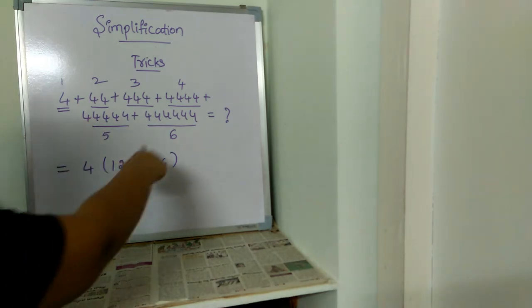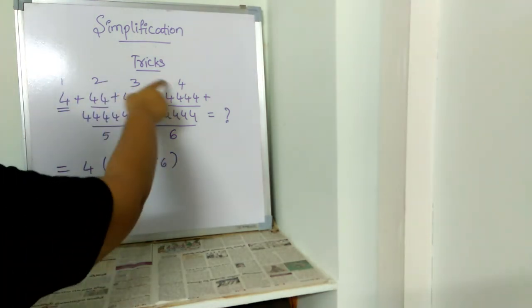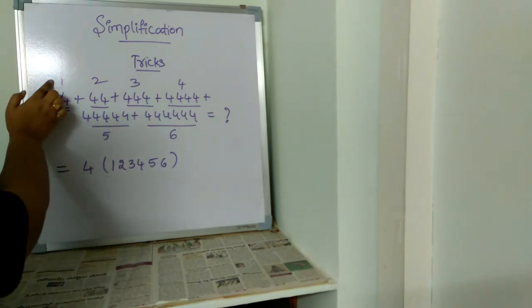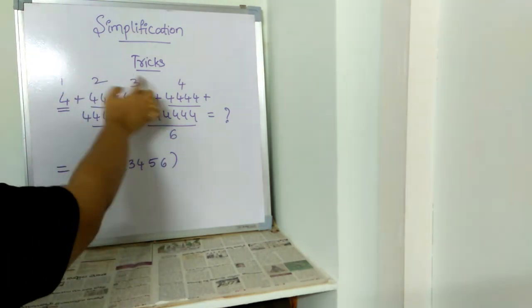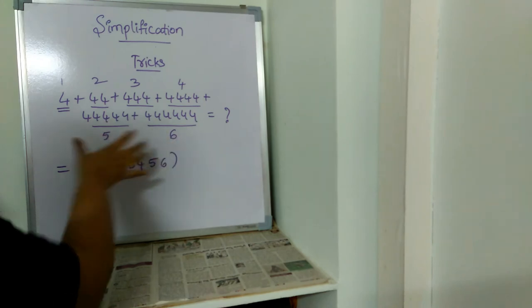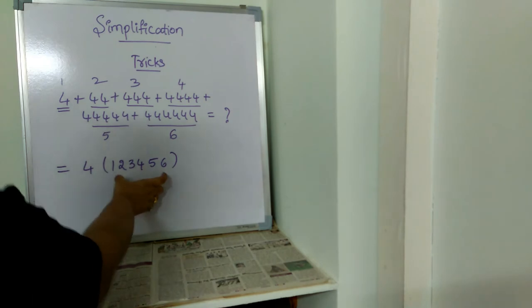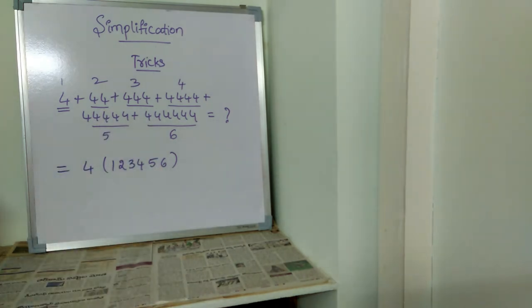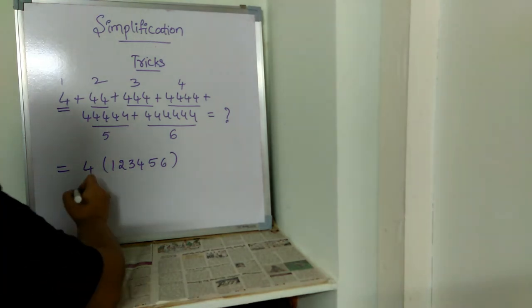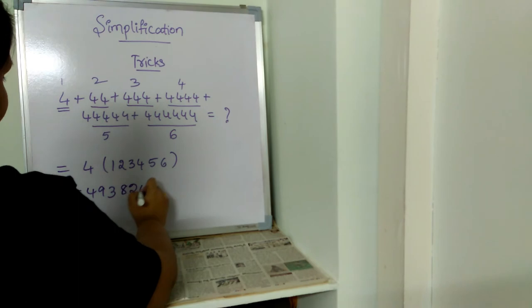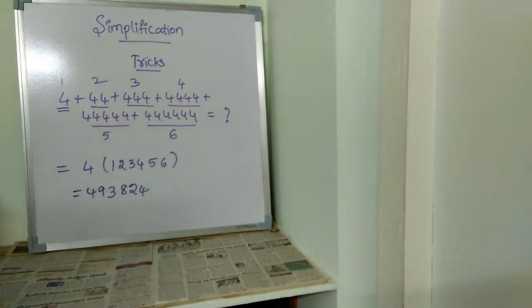In braces we've written the terms which we found out. Now we multiply both values: 4 into 123456. When we multiply 4 into 123456, the answer will be 493824.